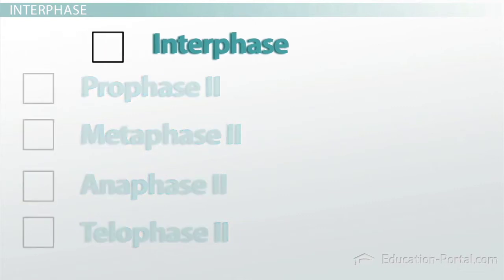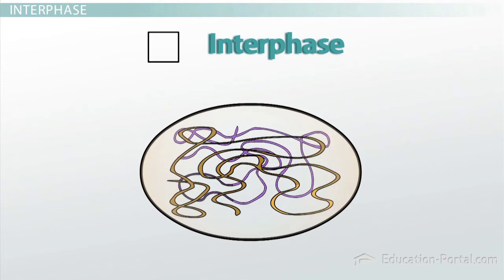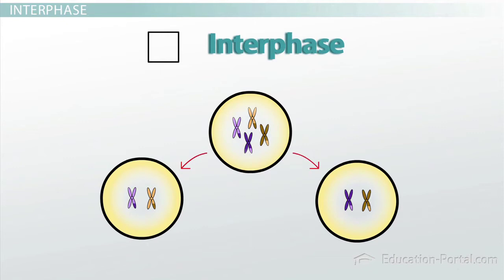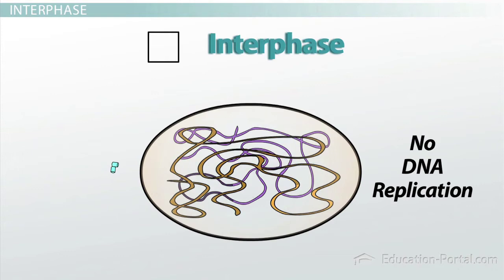Meiosis II is preceded by a brief interphase. Now, it's a special interphase because no DNA replication occurs in this case. Recall that meiosis I left each cell with only one set of homologous chromosomes, but each homologous chromosome consists of two chromatids. Like mitosis, the centrosome duplicates during interphase.